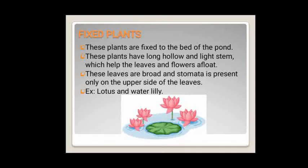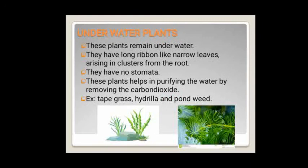Examples of fixed plants are lotus and water lily. The third type is underwater plants. These plants remain underwater, hence the name. They have long, ribbon-like, narrow leaves and have no stomata, as they remain under the water. These plants help in purifying the water by removing the carbon dioxide released by aquatic animals. Examples are tapegrass, hydrilla and pondweed.